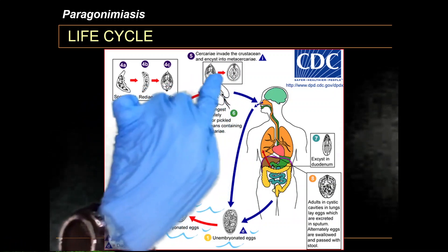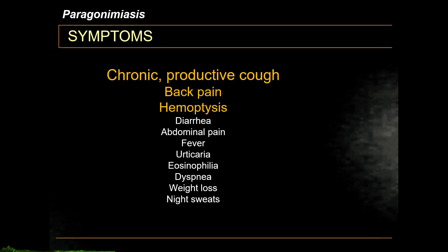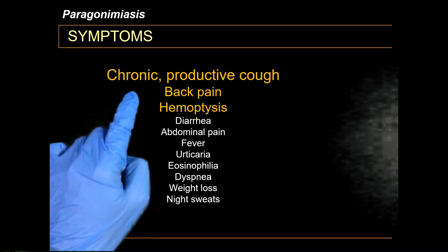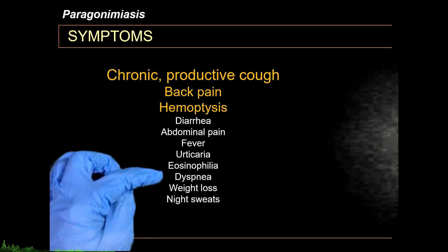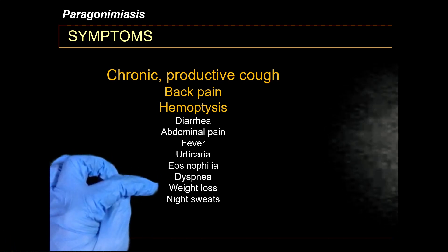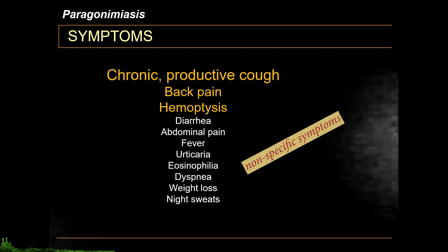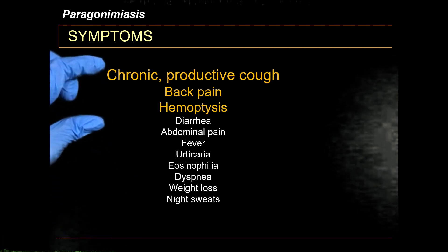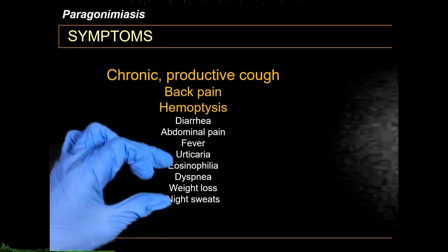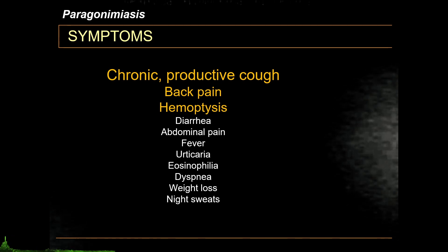The symptoms of Paragonimiasis include chronic productive cough, back pain, hemoptysis, dyspnea, weight loss, and night sweats. You can also see diarrhea, abdominal pain, fever, urticaria, and eosinophilia. These three — chronic cough, hemoptysis, and dyspnea — are the most common chief complaints. However, coupled with weight loss and night sweats, what pulmonary disease comes to mind?